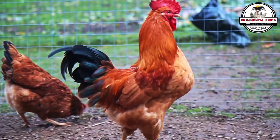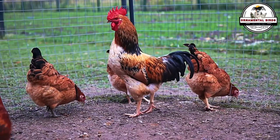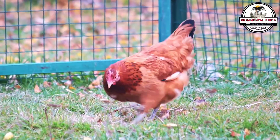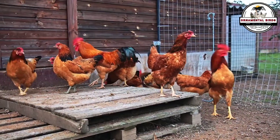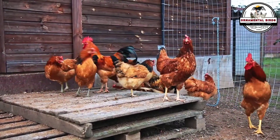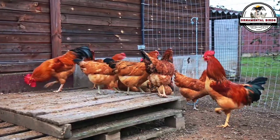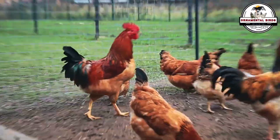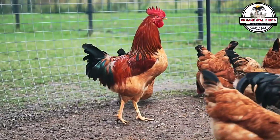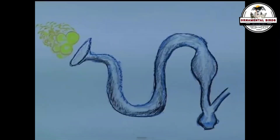When the rooster mates with the hen, he deposits his sperm into her cloaca — a small back door that the digestive, urinary, and reproductive systems share. Once inside, these tiny swimmers embark on an amazing journey through the oviduct, a long and winding tube that connects the ovary to the cloaca. Their final destination is the infundibulum, a section right next to the ovary.